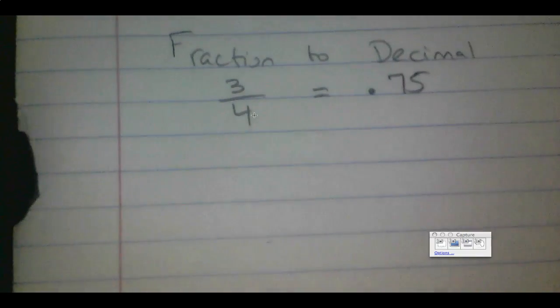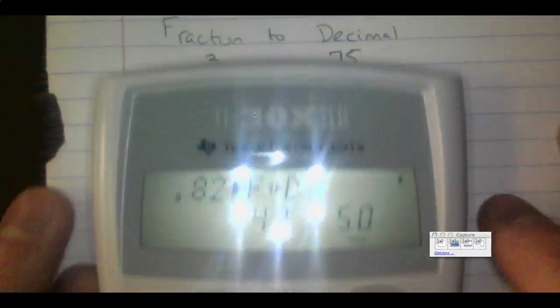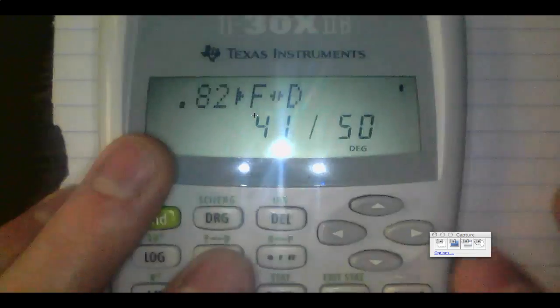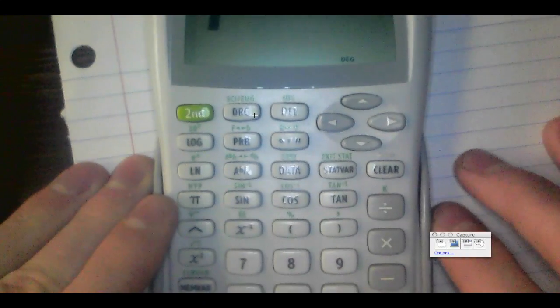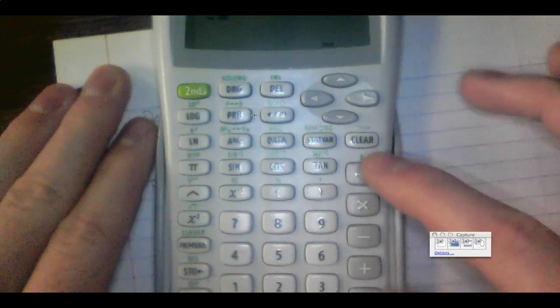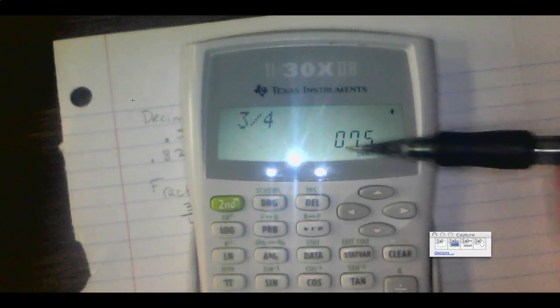Now let's go from a fraction to a decimal. There are two ways to do this. The first way is to simply type in 3 divided by 4 using the division key. Type in 3 divided by 4, press Enter, and we get 0.75.